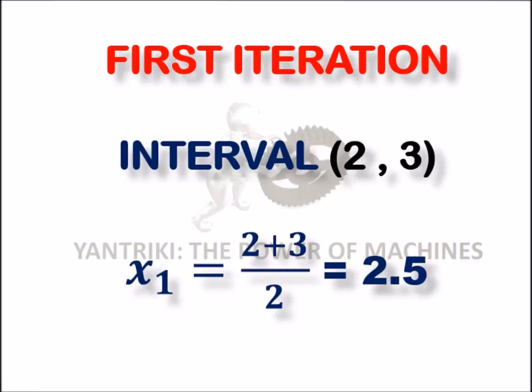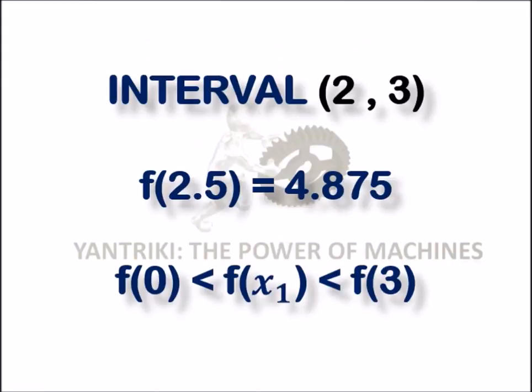So, using the formula (a + b)/2, it will be (2 + 3)/2 and we get the value of x₁ as 2.5. f(2.5) = 4.875, which means f(x₁) > 0. As f(x₁) is less than f(3), the root will be in the interval [2, 2.5].